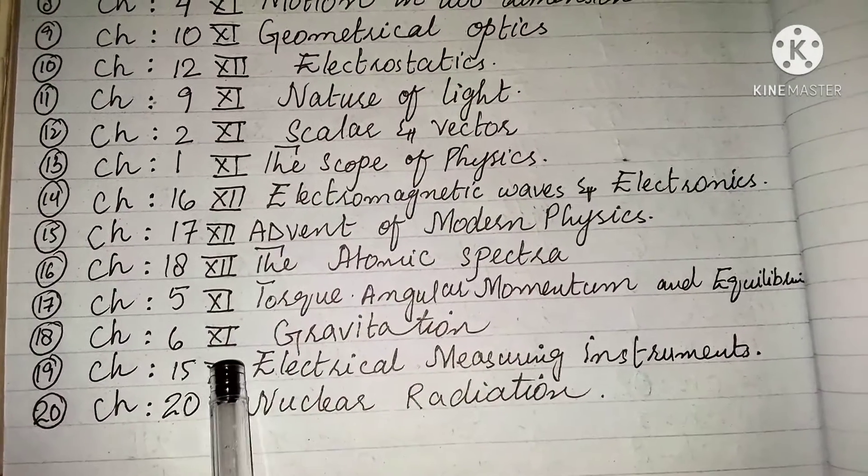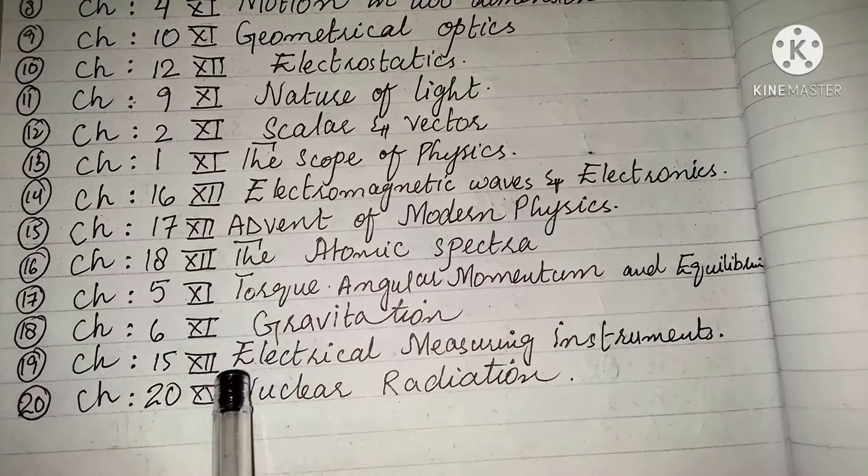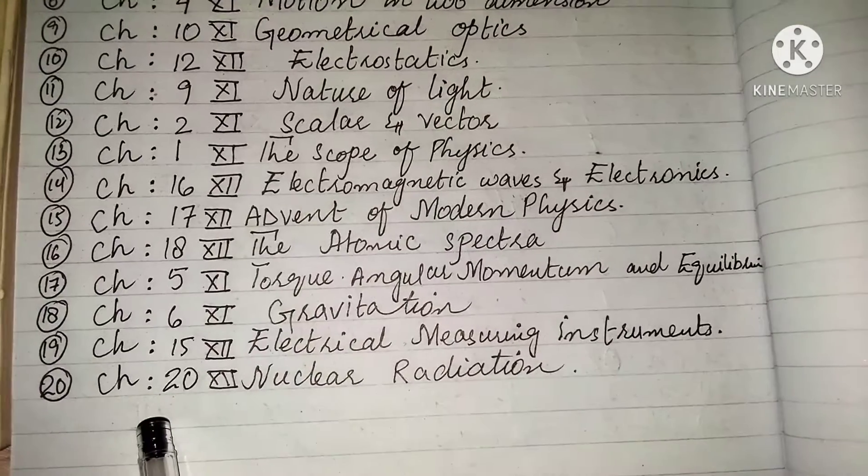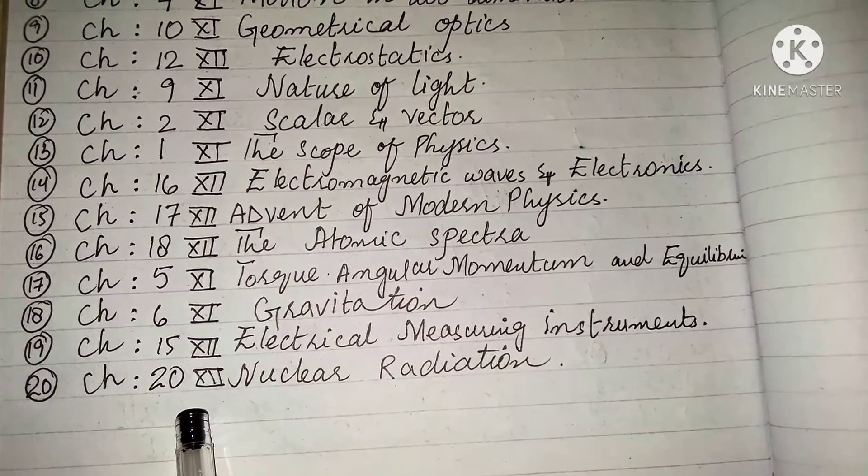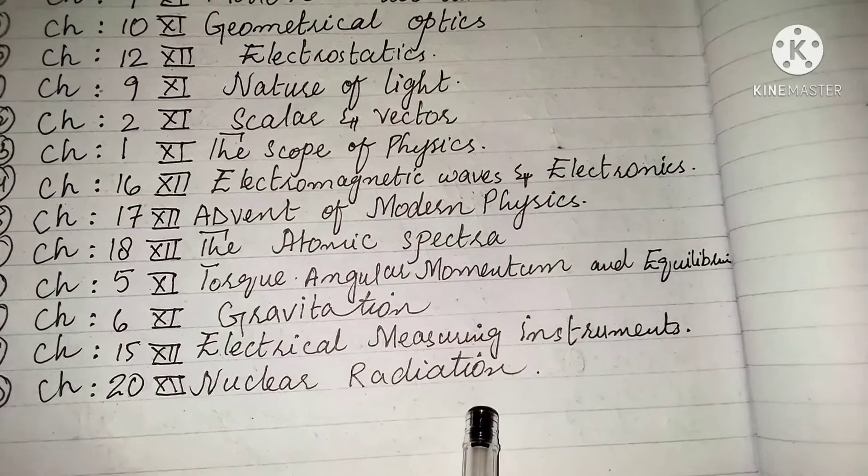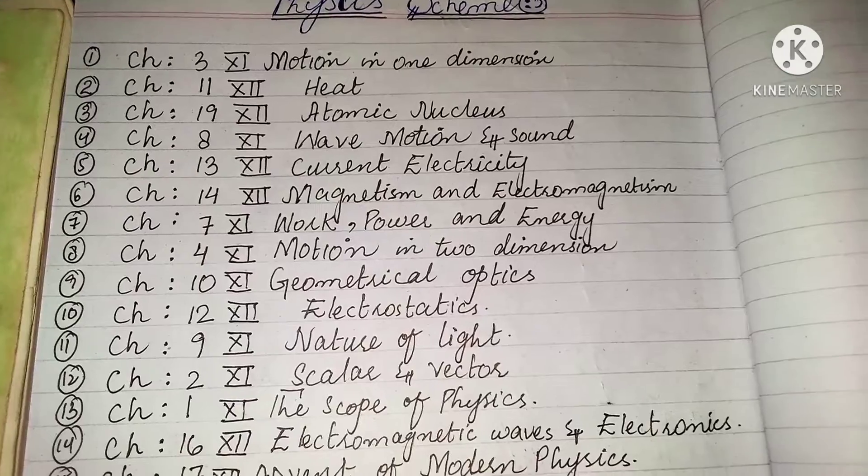Chapter 18, inter, the atomic spectrum. Chapter 5, first year, torque, angular momentum, and equilibrium. Chapter 6, first year, gravitation. Chapter 15, inter, electrical measuring instruments. Chapter 20, which relates to inter, nuclear radiation.